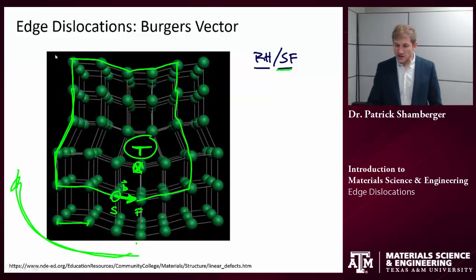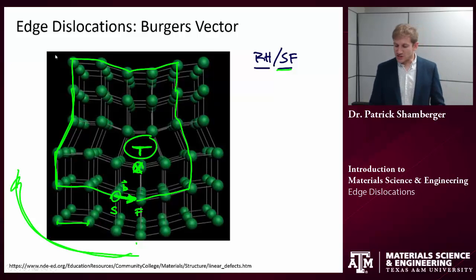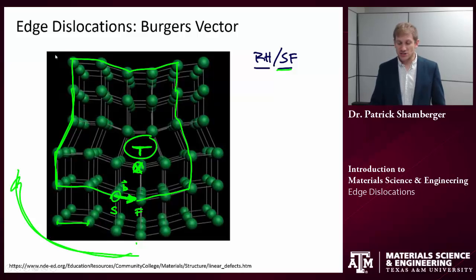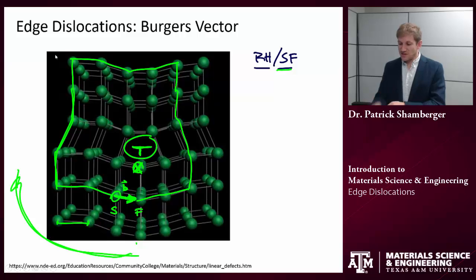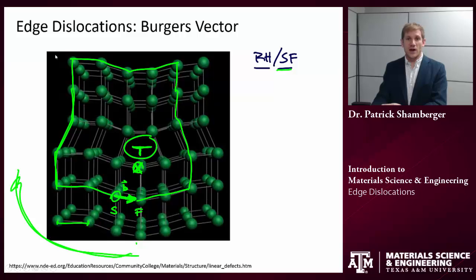Importantly, for edge dislocations we see that the Burgers vector is perpendicular to the dislocation. The dislocation is a vector that's going into and out of the page, and the Burgers vector is going from left to right. So those two are perpendicular.